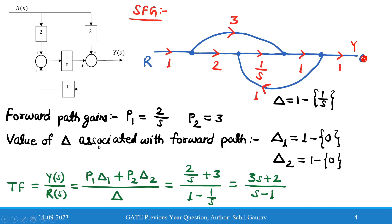Applying Mason's gain formula, we find all terms. Delta = 1 minus the sum of loop gains. There is only one loop forming: (1/s) × 1 × 1 = 1/s. So delta = 1 − 1/s. No other loops are forming, so all remaining terms are zero. Therefore delta = 1 − 1/s.